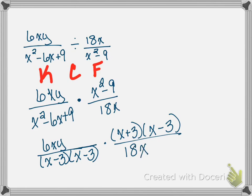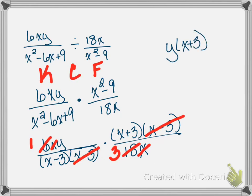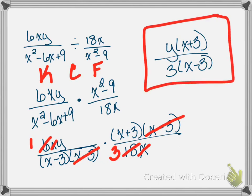I have x minus 3 and x minus 3 — cancel. I have x in the numerator and x in the denominator — cancel. 6 goes into 6 once, and 6 goes into 18 three times. My final answer is y times x plus 3 in the numerator over 3 times x minus 3 in the denominator. You can multiply it out if you want — I'll give full credit for either form.